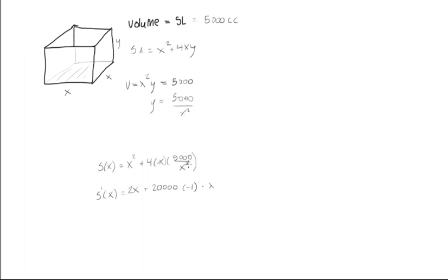And now this is x to the power of negative 1, so we'll actually get times negative 1, times x to the, this would be minus 1, so we're going to subtract 1, so this is going to be x to the power of negative 2.